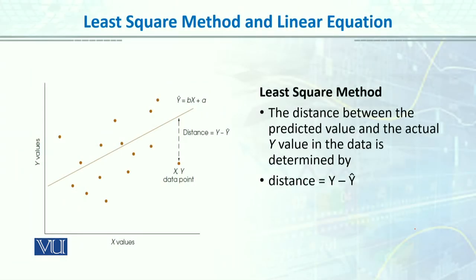The least square method is concerned with the distance between the predicted value and the actual value. The actual y value in the data is determined by a distance that is equal to y minus predicted y.